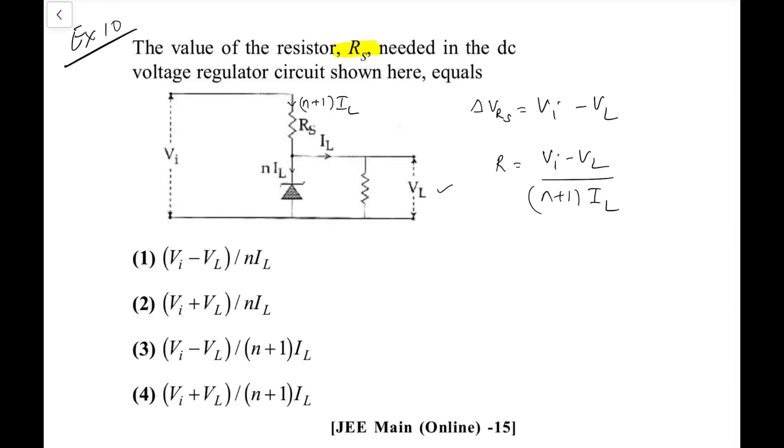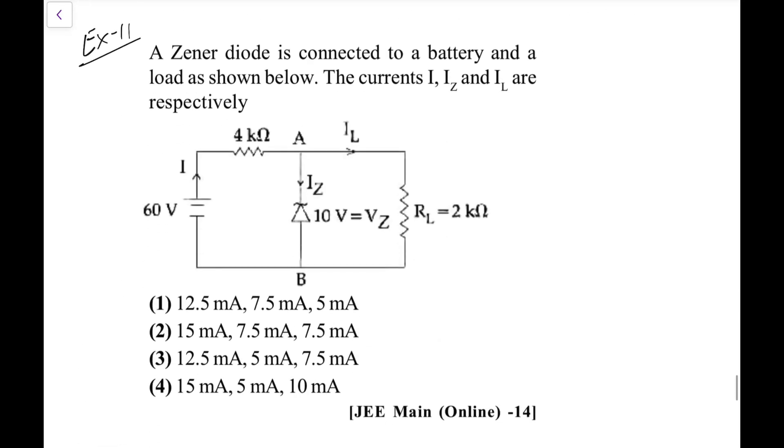So that is V_I minus V_L upon n plus 1 I_L that we get. So going by this, the option that I am getting is option 3. You can do.